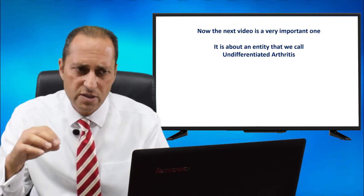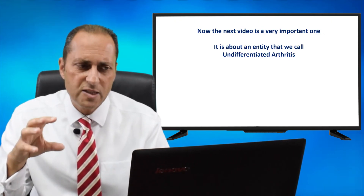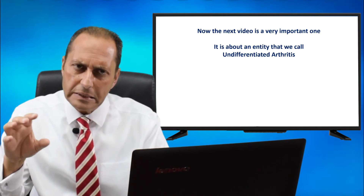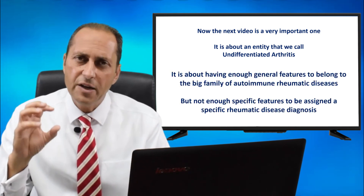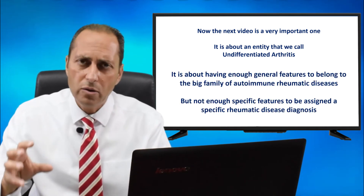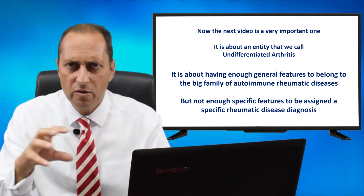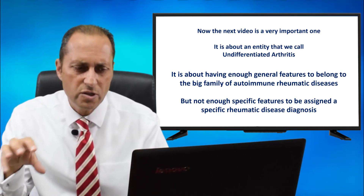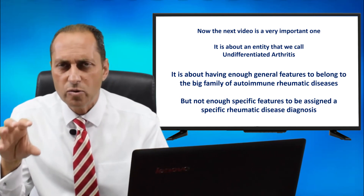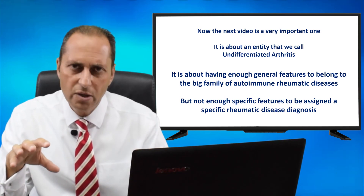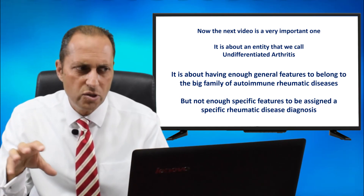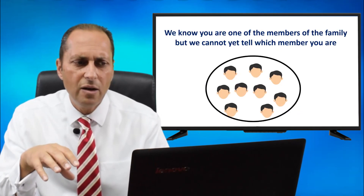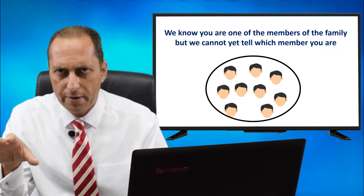The next video in this series is a very important one. It's about an entity we call undifferentiated arthritis — having enough general features to belong to the big family of autoimmune rheumatic diseases, but not enough specific features to be assigned a specific rheumatic disease diagnosis. In other words, we know you are one of the members of the family, but we cannot tell which member you are.